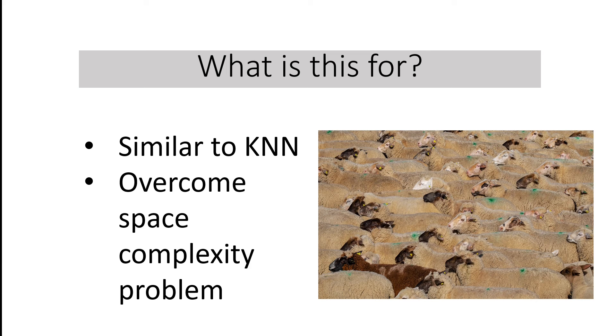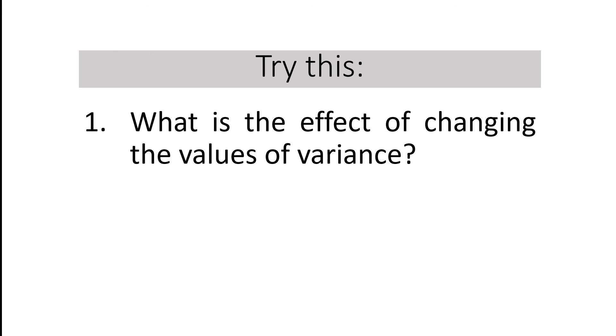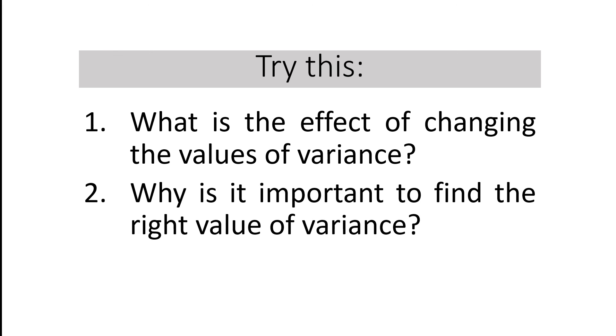What is this for? Why do we have to study this? Radial basis function is very famous because it is very similar to K-nearest neighborhood algorithm. Because of the similarity, it also has the advantages of K-NN and can even overcome space complexity problem. The main reason for this is that it only stores the support vectors during the training, hence the saving of the spaces. After all being said and done, let's try this. What is the effect of changing the values of variance? Why is it important to find the right value of variance? Please write your answers in the comment down below so that we can have a rich interaction of ideas and learn from each other.